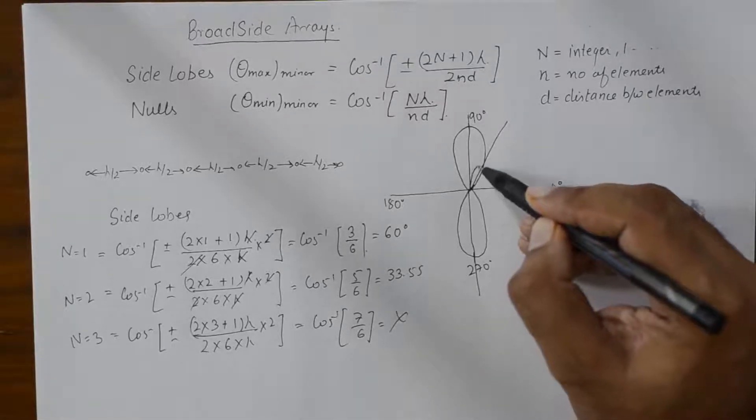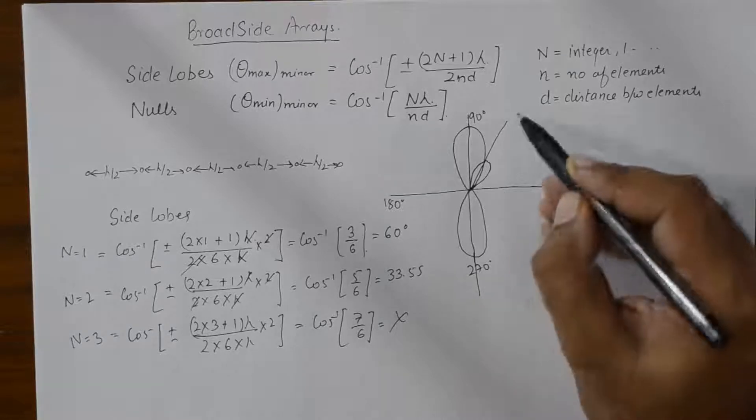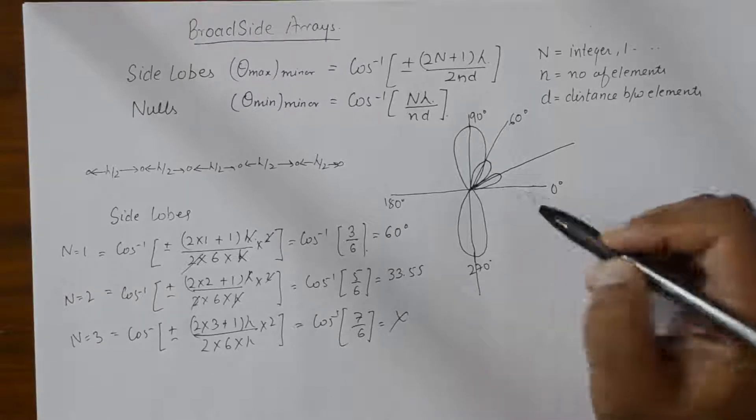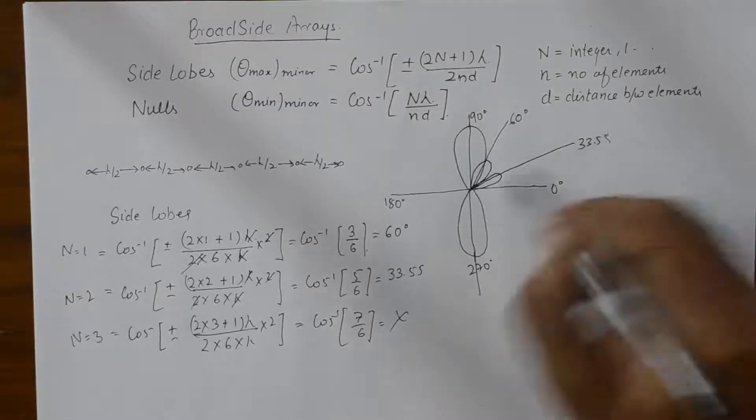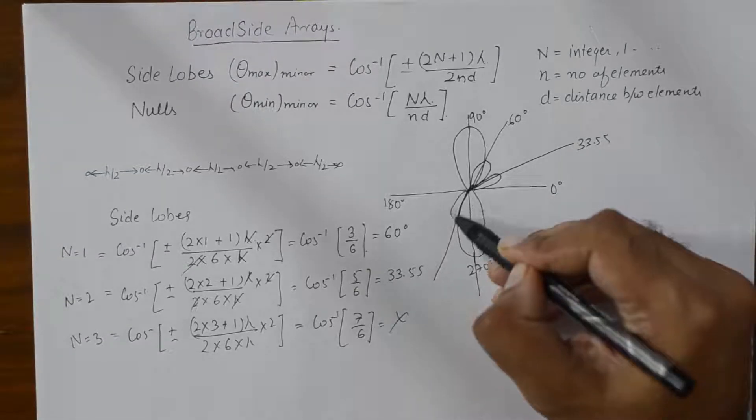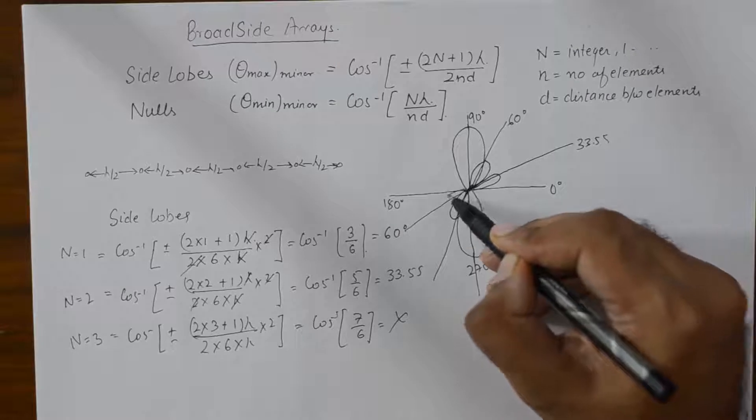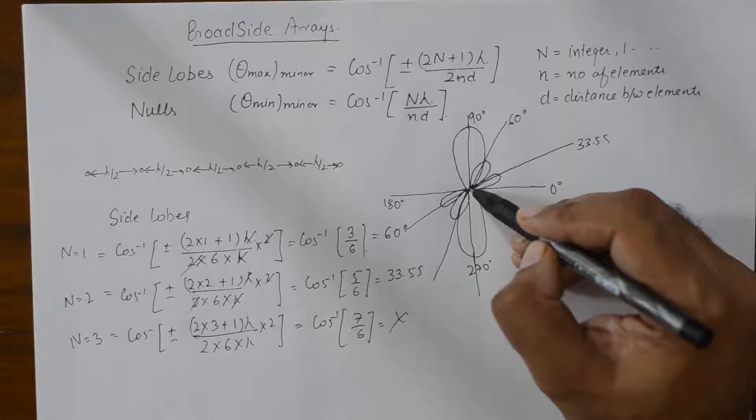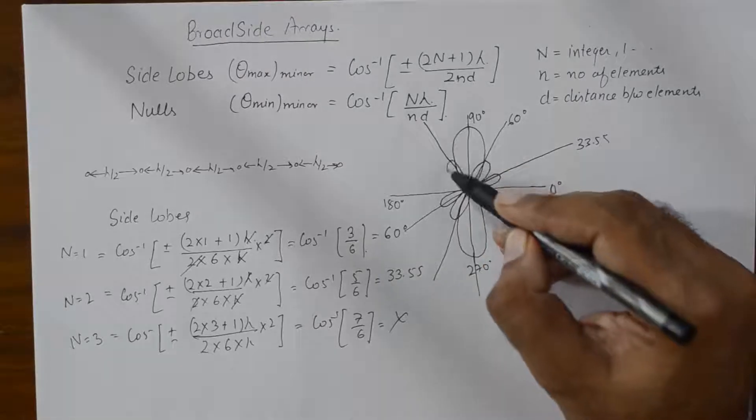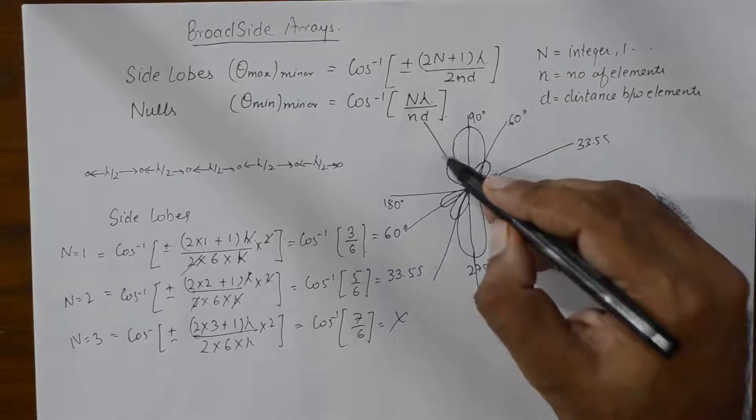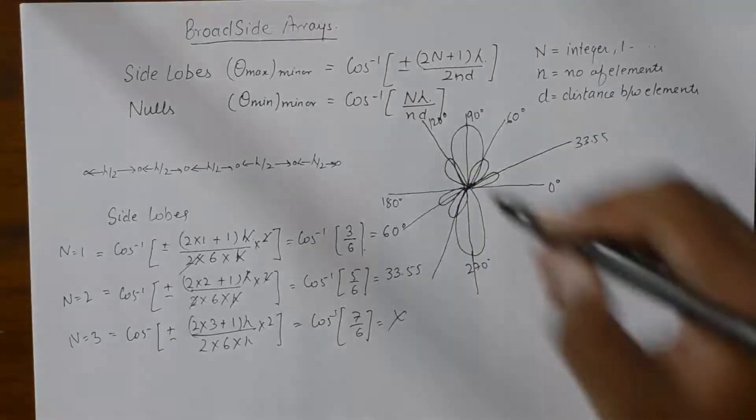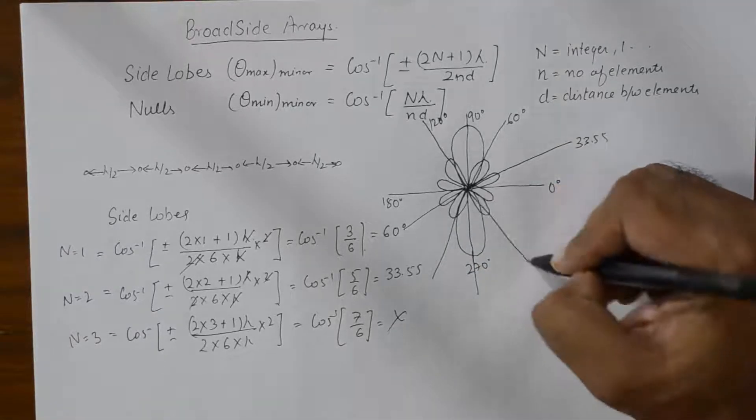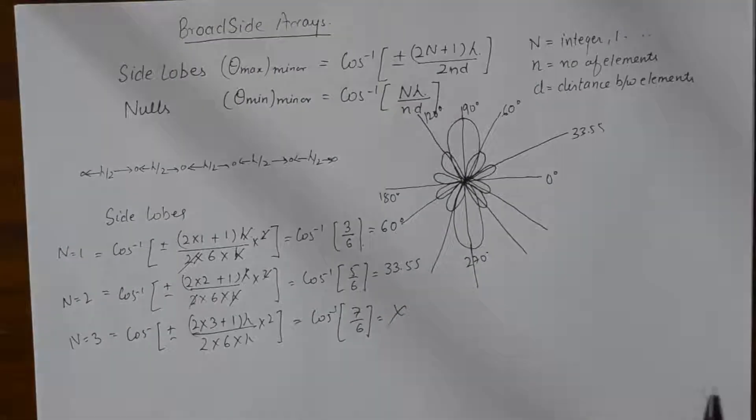So, let's say my first side lobe is at 60 degrees. My second side lobe is at 33 degrees. So, I can extrapolate this here and I can extrapolate this here and so on. And the mirror image of 60 will give us a side lobe at 120 and so on. So, all in all, we will get 8 side lobes.